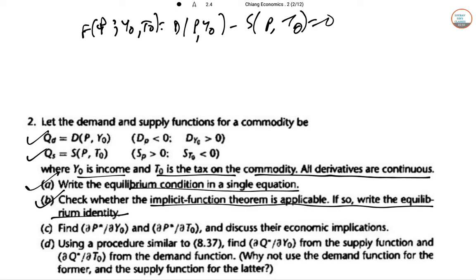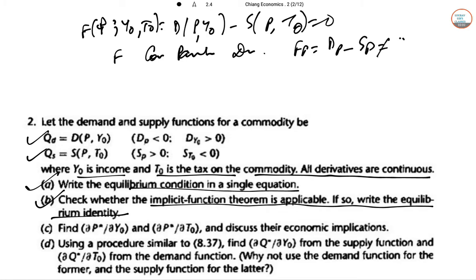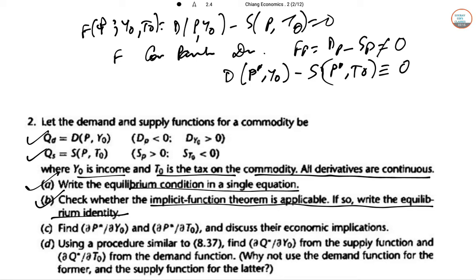Check whether the implicit function theorem is applicable. F has continuous partial derivatives, and ∂F/∂P = D_P − S_P ≠ 0. So the implicit function theorem is applicable, and the equilibrium identity is D(P*, Y₀) − S(P*, T₀) ≡ 0.